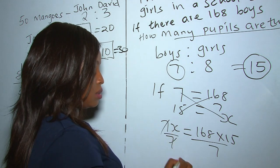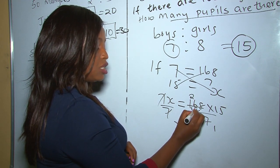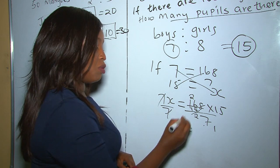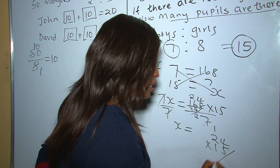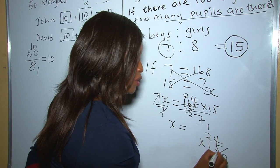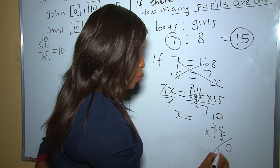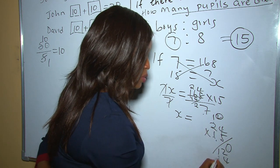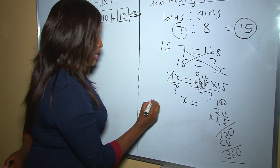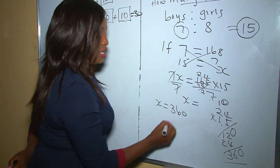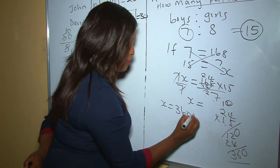We cross-multiply: 7x equals 168 times 15. To find x, divide both sides by 7: 168 divided by 7 is 24, and 24 multiplied by 15 equals 360. Therefore x equals 360, so all the pupils in that school were 360.